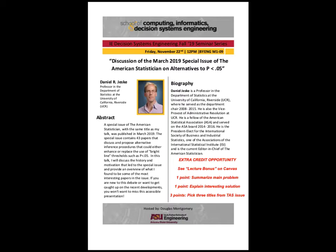This bonus opportunity — if you're not available at noon on Friday — there's still an opportunity to get some points. Five points are possible: the first two are to summarize what Dan says the main problem is and explain what you think are some interesting solutions. The last three points are to find the American Statistician issue online, and pick three titles from the table of contents that you find interesting. That's available even if you don't attend.